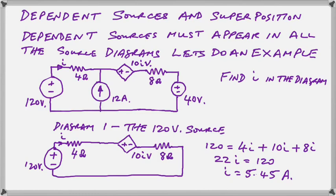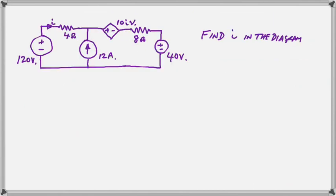There is the simple solution in three lines. Notice that the dependent source in the equation is represented by its equation 10i. And that is a voltage around the KVL loop.